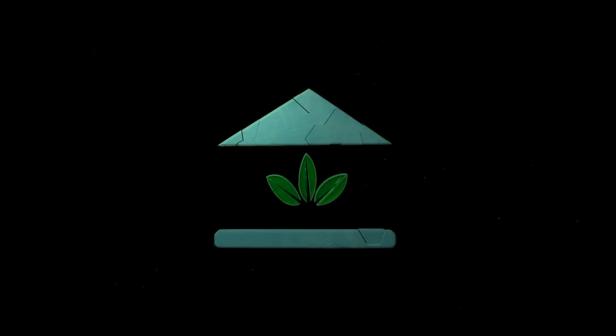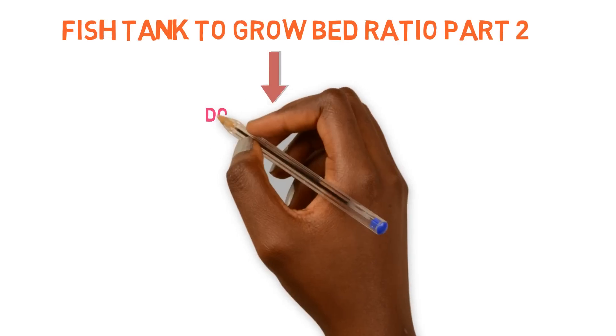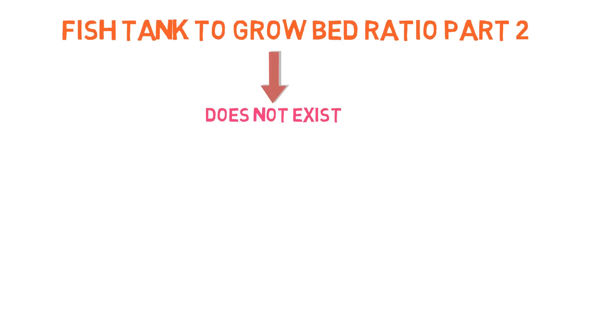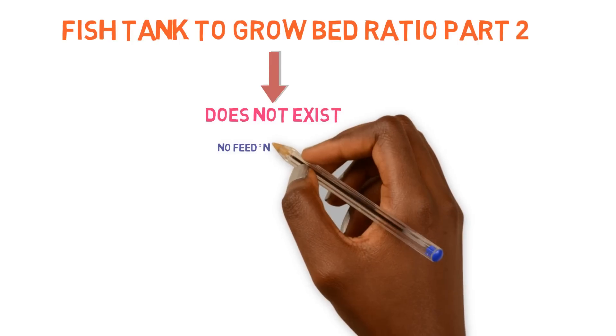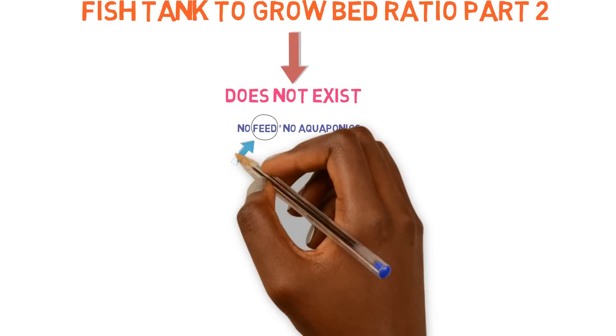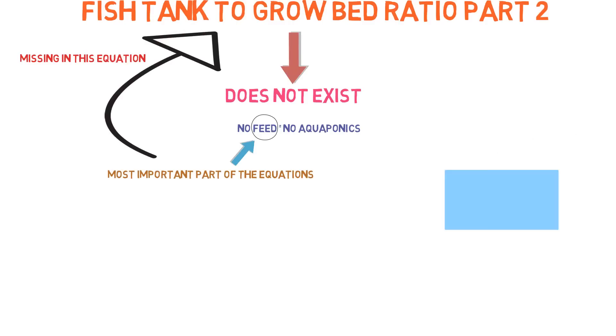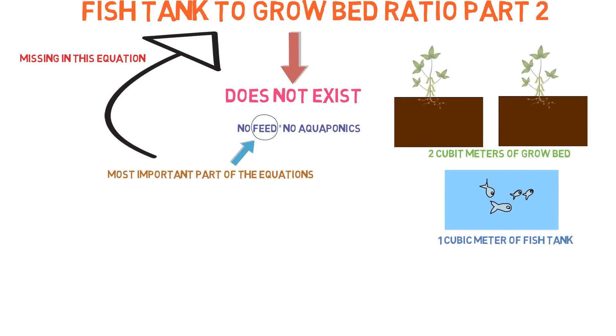The school of aquaponics. We now know that there is no such thing as a fish to grow bed anything. Fish don't provide nutrients without feed. So we know that the feed is the most important part in the equation. You can have a fish to whatever grow bed ratio, and if you don't put any feed in there, all you're going to have is a dead fish to a dead plant ratio. That's it.